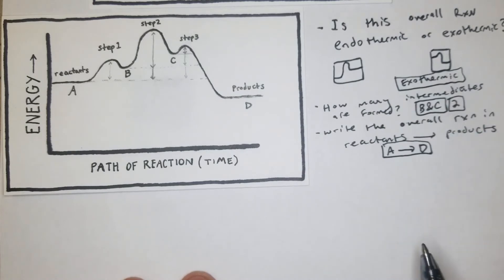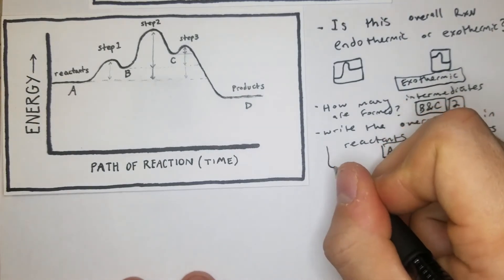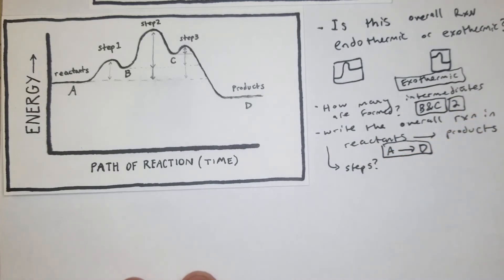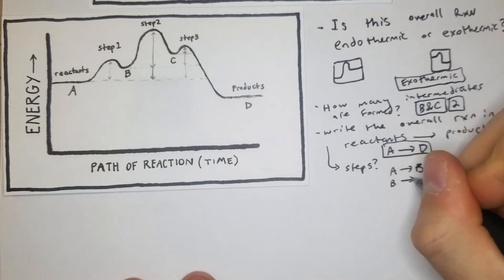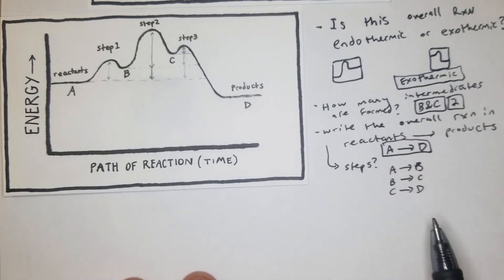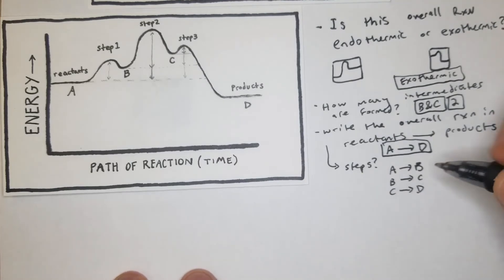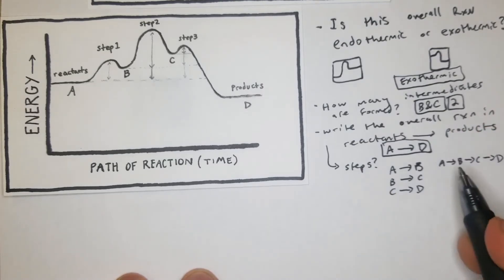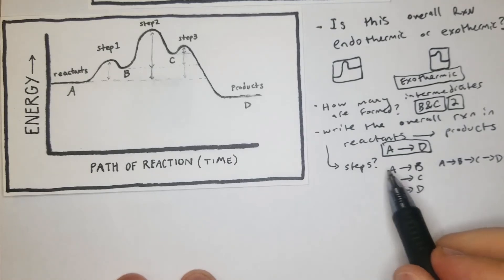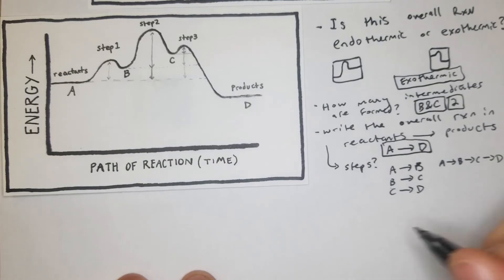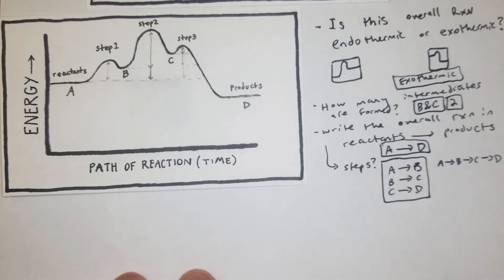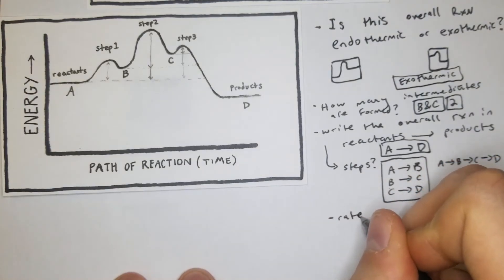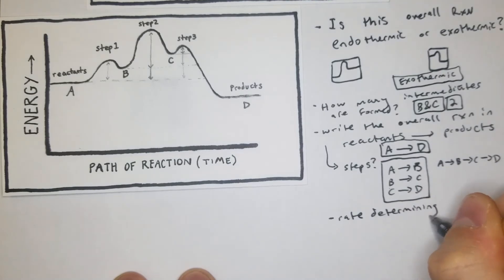If we're asked to write out the individual steps for this multi-step problem, we'd write: A yields B, B yields C, C yields D. I had a question like this in class once and lost points for writing it all on one line instead of in three separate rows. So make sure you write the steps in columns when asked.